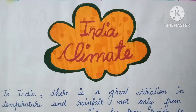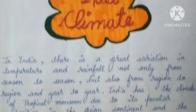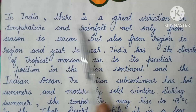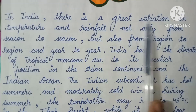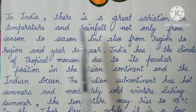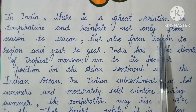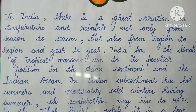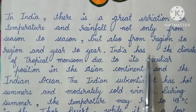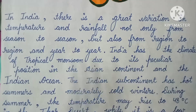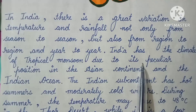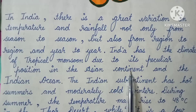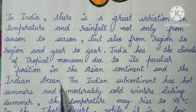The first heading is India Climate. In India there is a great variation in temperature and rainfall, not only from season to season, but also from region to region and year to year. India has the climate of tropical monsoon due to its peculiar position in the Asian continent and the Indian Ocean.